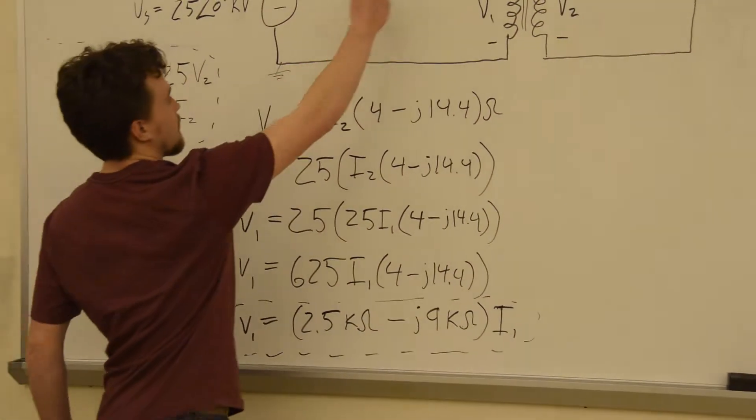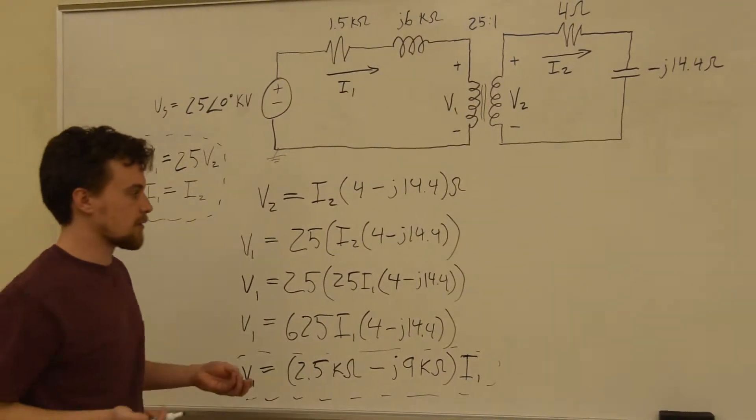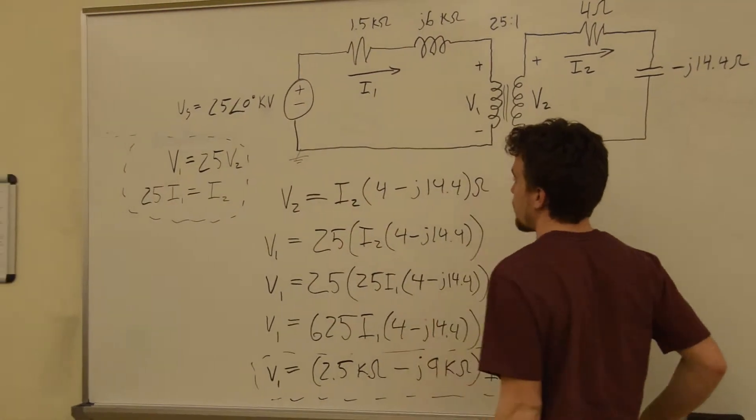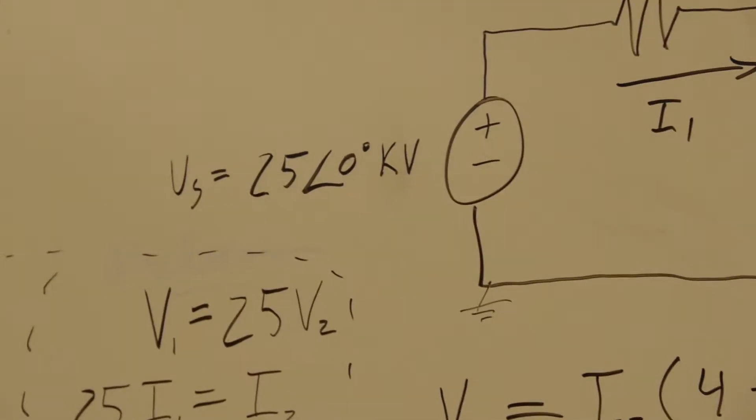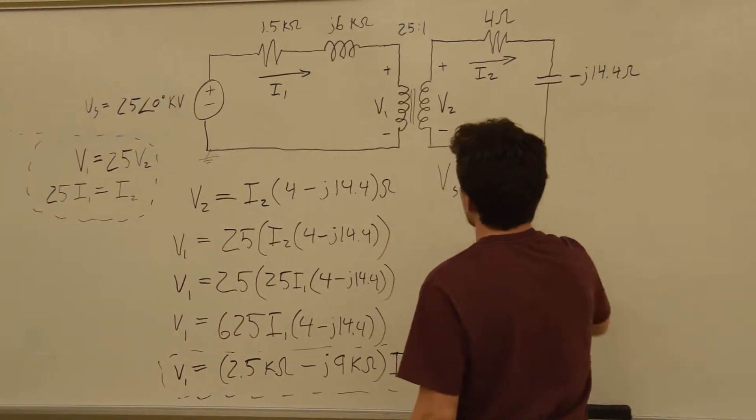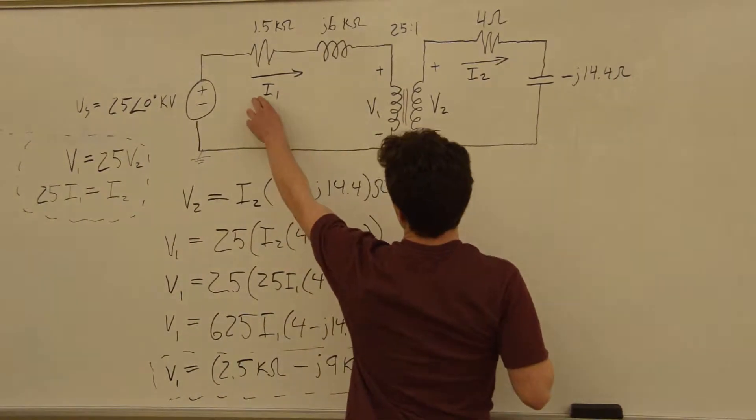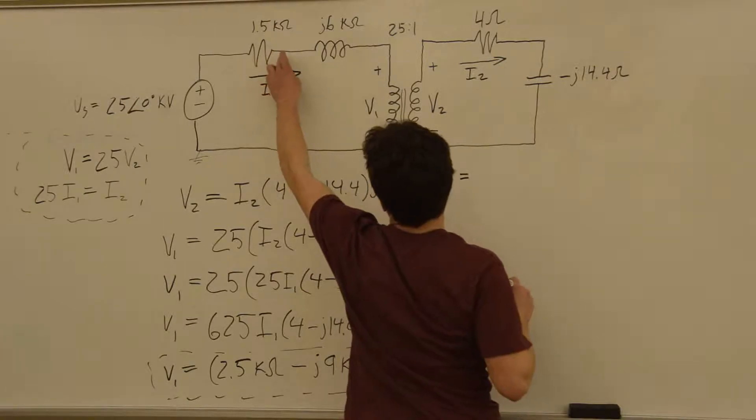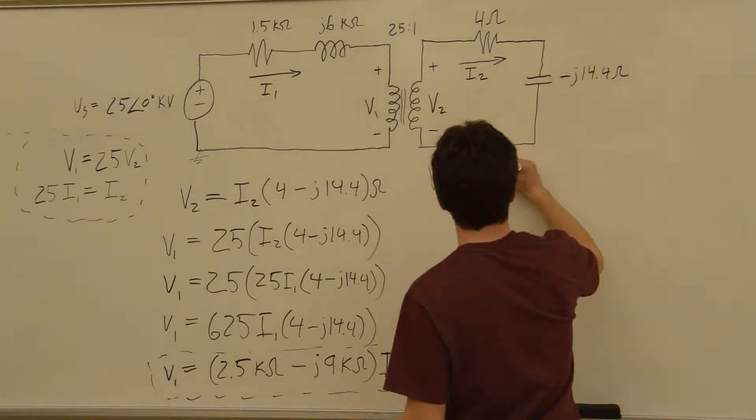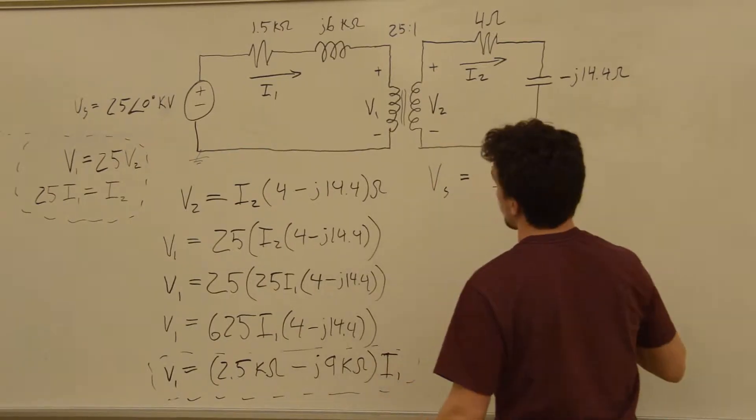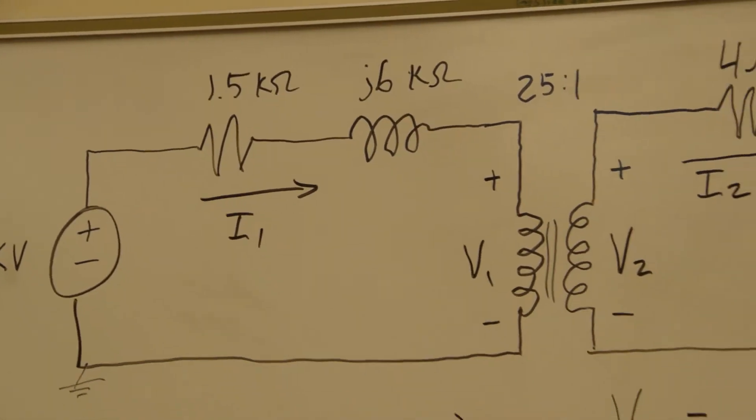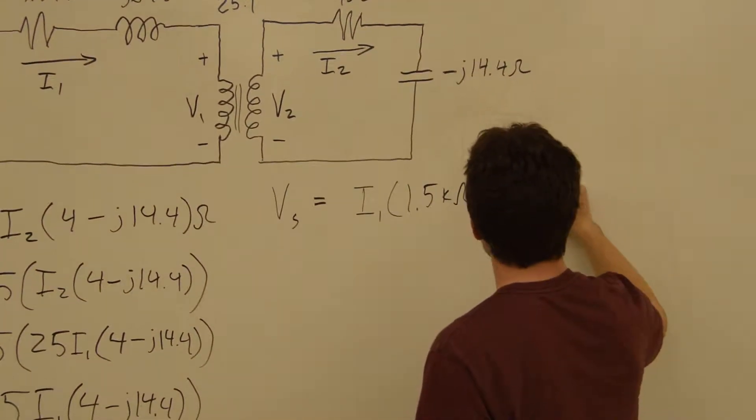And we'll do KVL around this loop to get another equation to solve for some values. So we're going to say that Vs, we know what our source voltage is. It's 25 kilovolts to the phase of zero. But we'll just call it Vs for now. We know that Vs is equal to I1 times their resistances or impedances. We'll say it's equal to I1 times 1.5 kilo ohms plus J6 kilo ohms.